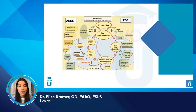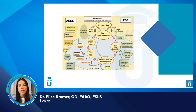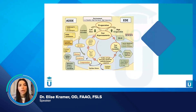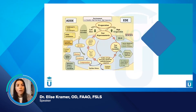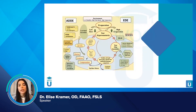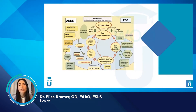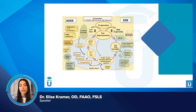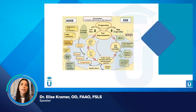It's very important to get into this dry eye vicious cycle and interrupt it to restore homeostasis. Regardless of whether it's aqueous deficient or evaporative, the vicious cycle is very similar. However, just because it leads to the same vicious cycle doesn't mean it's managed or treated the same way.